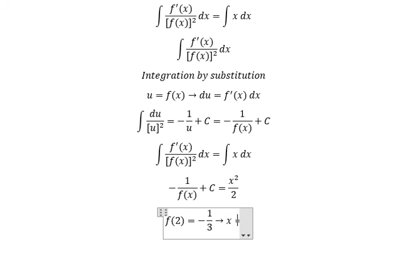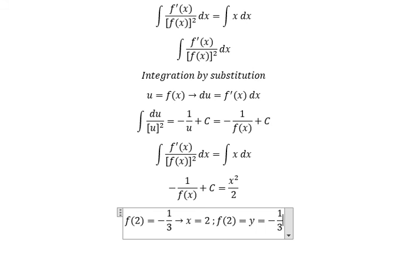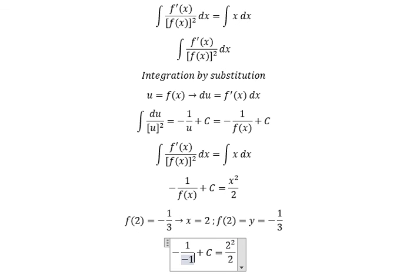When s equals 2, f(2) equals y, and that gives negative one over three. We substitute s = 2 into the equation and find the constant. So this gives negative one over three.